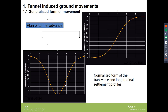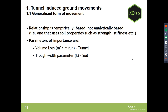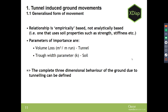Above the crown of the tunnel, movements take a normal distribution shape — this is the kind of movement you get as you advance the tunnel along. Because it is empirically based, the inputs are much simpler than 3D FE. There are two main inputs to derive for your tunnel: volume loss, which is based on tunnel characteristics such as the type of tunnel boring machine and depth; and the trough width parameter, which represents the soil. From these few parameters you get the complete three-dimensional behaviour of the ground due to tunnelling.